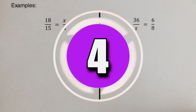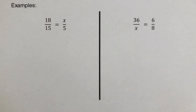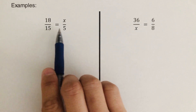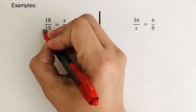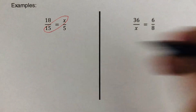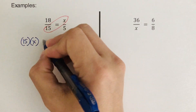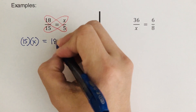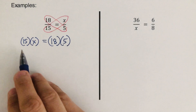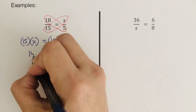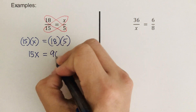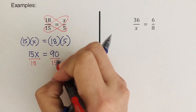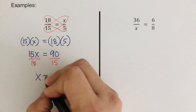For this problem, some people do it the wrong way — please do not multiply the wrong pair. What we are multiplying are 15 and x, and that is equal to 18 times 5. So 15x is equal to 90. We want x by itself so we divide both sides by 15, and we're left with x is equal to 6.